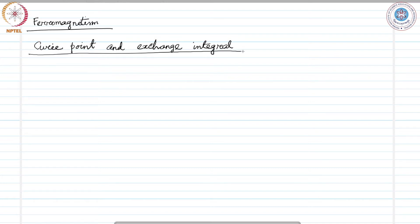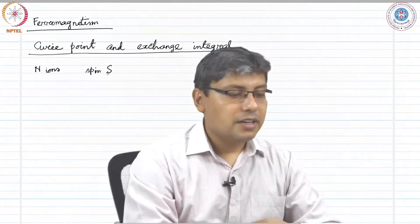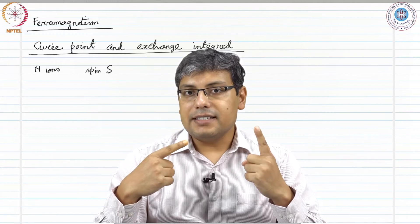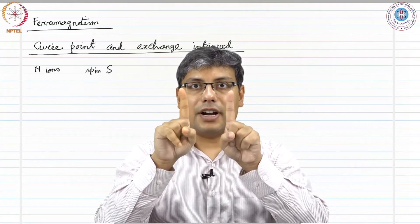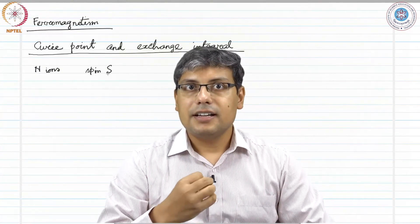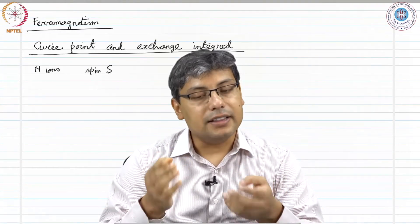If we consider a paramagnet with a concentration of N number of ions with spin S, and given an internal interaction tending to line these magnetic moments — these spins along a certain direction parallel to each other — if we have that kind of a situation, then we have a ferromagnet. Normally the spins are randomly aligned in any direction, but if there exists an internal field in the system that tries to make them line up parallel to each other, then all the spins will align along the same direction and we call it a ferromagnet.